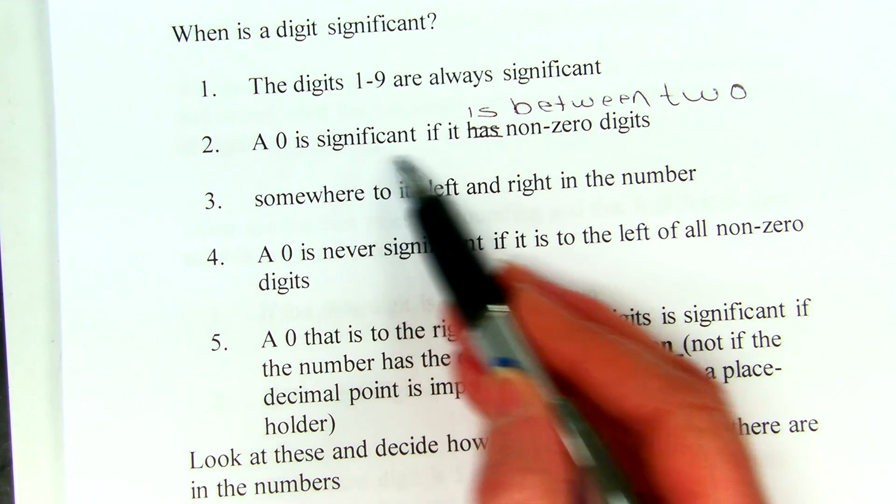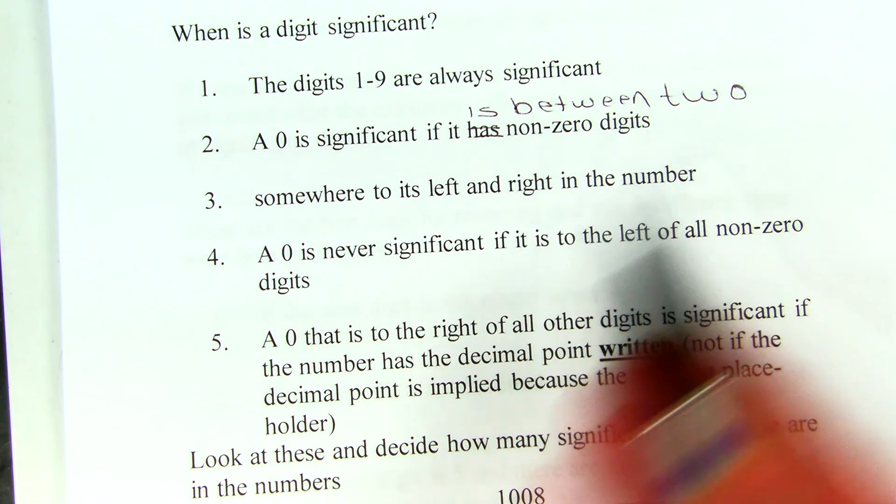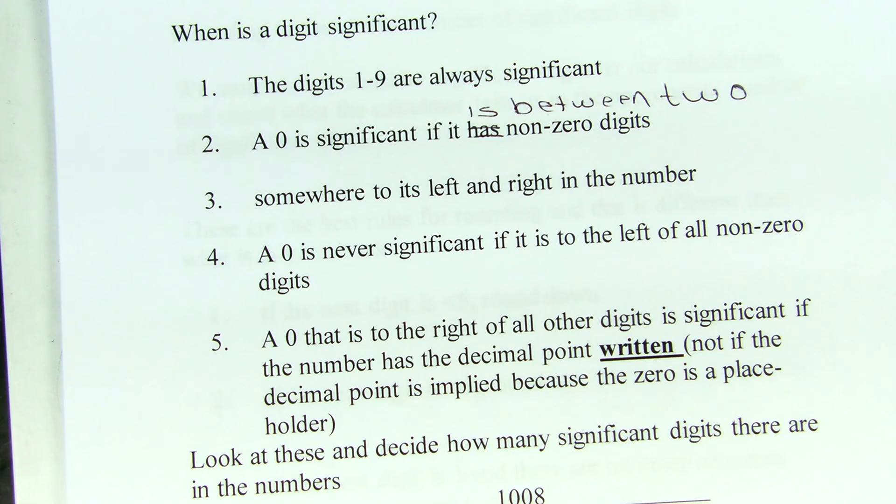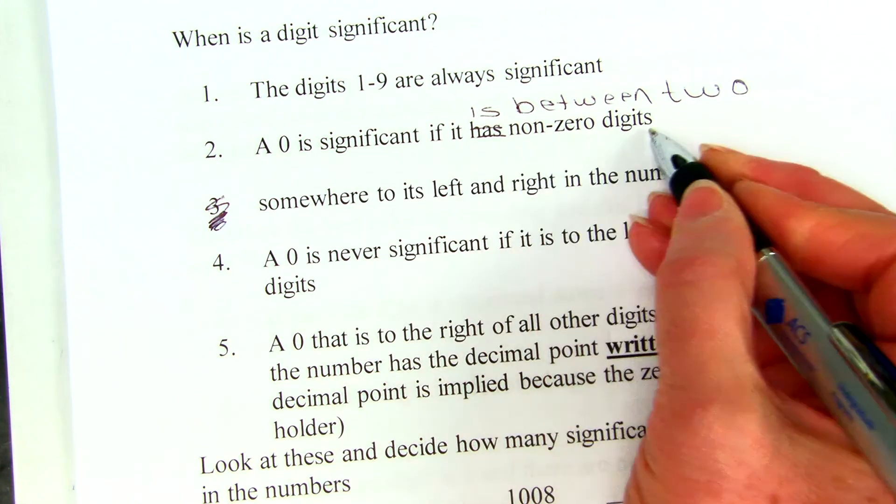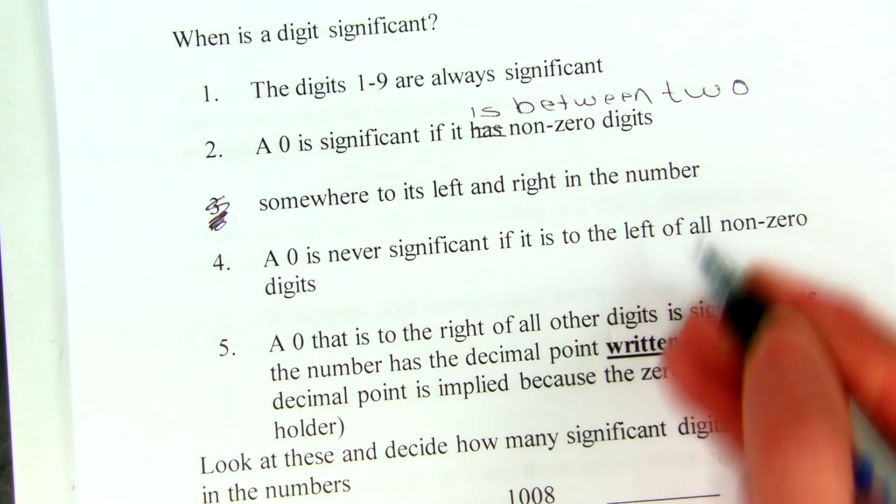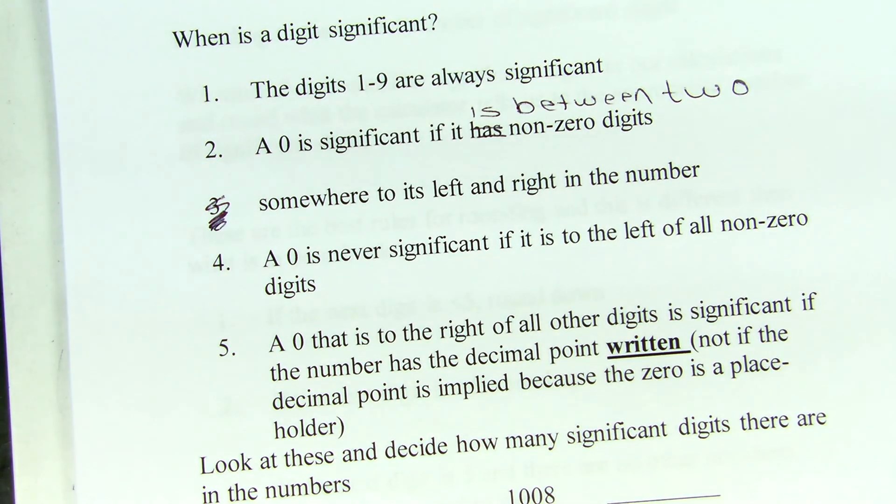So, a zero is significant if it is between two non-zero digits. Oh, I see. This wrapped around. If it has non-zero digits somewhere to its left and right. I see what happened. That was autocorrect for word.